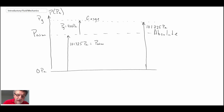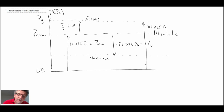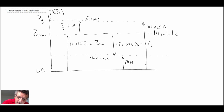If we have a pressure lower than atmospheric, that would be our vacuum pressure. Let's say we have a vacuum pressure of minus 51,325 pascals — we'll call that P sub v. The absolute pressure there would be 101,325 minus 51,325, giving an absolute pressure of 50,000 pascals.